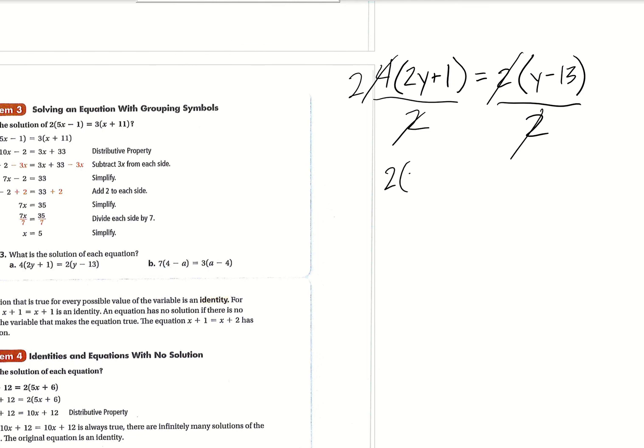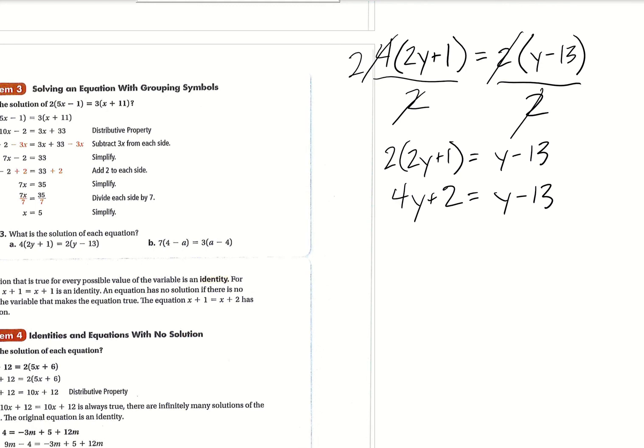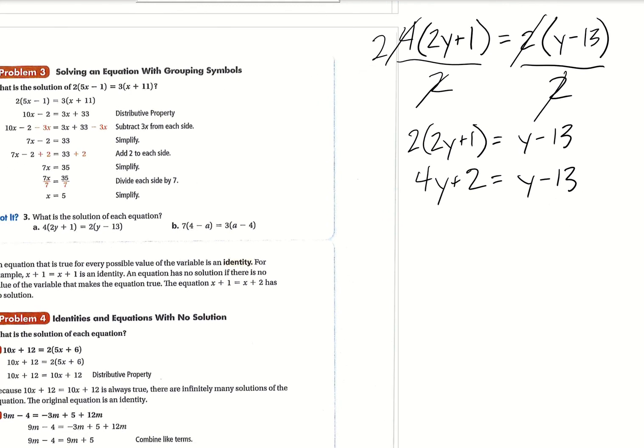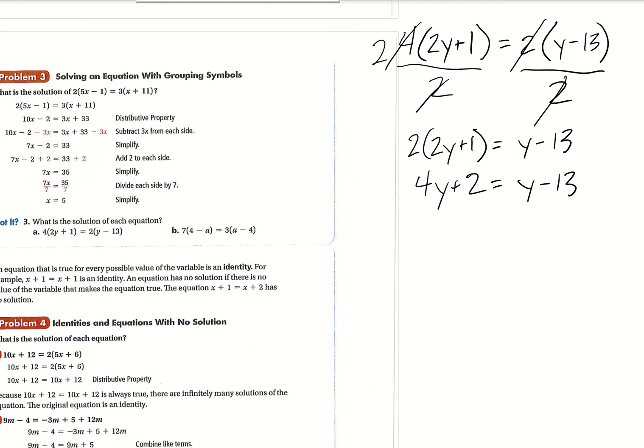And then this will just become a two. So now you're left with two times two Y plus one equals Y minus 13. Okay. Then you can just distribute. So you'd have four Y plus two equals Y minus 13. All right. So that ends up being an extra step, but you get smaller numbers. So if you want to do it that way, that's fine with me as well. A lot of these, there's different ways to do them.